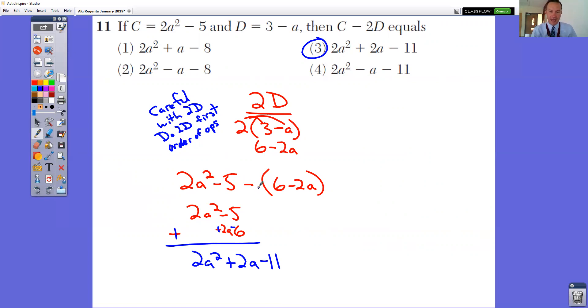So notice that you're subtracting a binomial minus a binomial. So I would line them up, line up your A squareds with your A squareds, your A's with your A's, your plain numbers with your plain numbers, change it into an adding question. So change your minus sign to a plus sign, change all the signs in the bottom row. So we have 2A squared plus nothing, which is 2A squared, nothing plus 2A, which is plus 2A. And then we have negative five plus negative six, which is negative 11. So you get this trinomial as your answer.